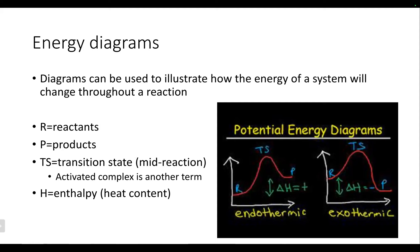On the right-hand side where we have the P, that's showing the products — the substances we're going to be creating with this reaction. In the middle, we've got TS, which may be a new concept — that's just going to be the transition state. With these reactions, we don't immediately go from reactant to product; it's usually a multi-step process where we've got intermediates, and that's what we're representing with the transition state. With certain classes, you may actually try to determine what those transition states are going to be to better understand how that reaction is progressing.